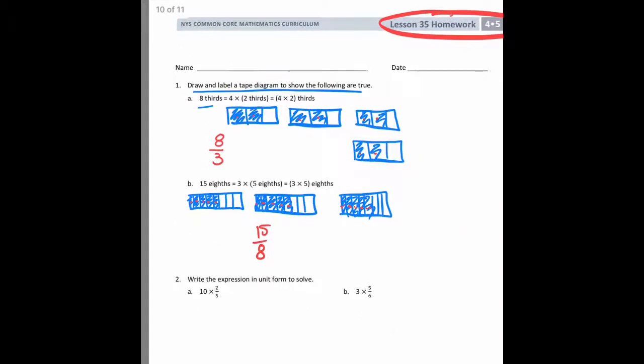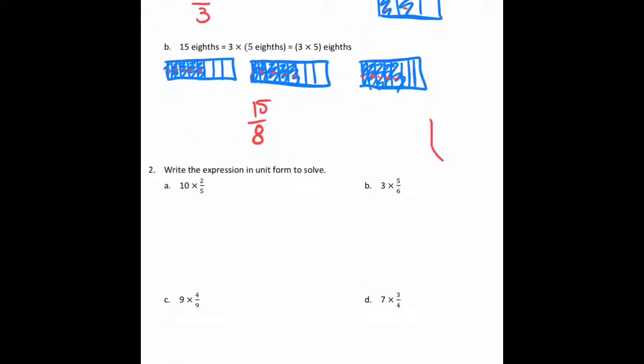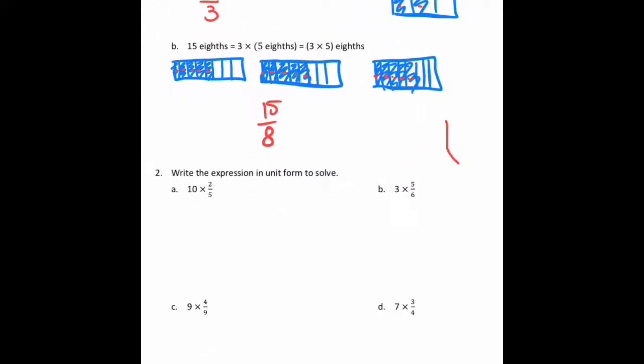Alright, on number 2, it says write the expression in unit form to solve. Remember, unit form is kind of like what they have up top where instead of saying 10 times 2 fifths numerically like it looks right here, I would say 10 times the number 2 and then the word fifth. It's kind of like saying 10 times 2 dogs. I'm going to get 20 dogs, but here I'm turning fifths into the unit so you don't forget that you're not supposed to multiply that first number by the denominator. You only multiply it by the numerator.